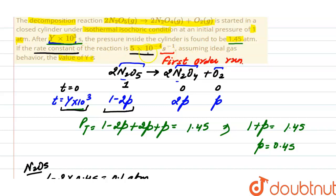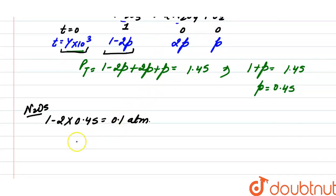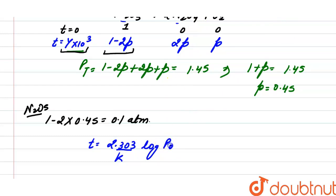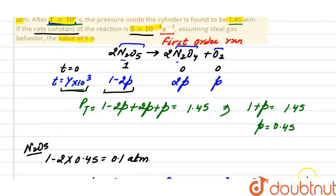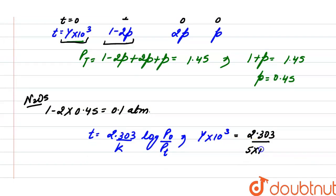We have to find out the time, and the rate constant is given, so we will use the relation: time = 2.303 divided by rate constant, multiplied by log of initial pressure divided by final pressure. Here time is y into 10 raised to the power 3, equals 2.303 divided by 5 into 10 raised to the power minus 4, multiplied by log of initial pressure of N₂O₅ which is 1, divided by final pressure of N₂O₅ which is 0.1.